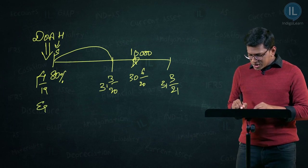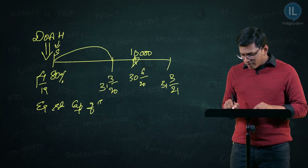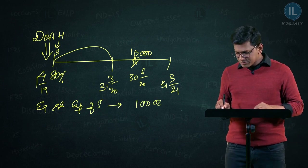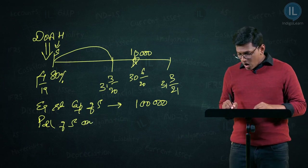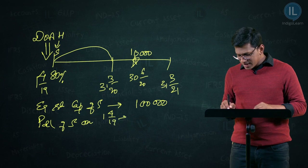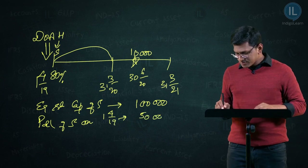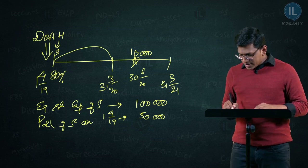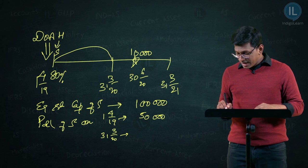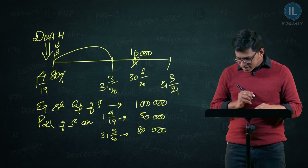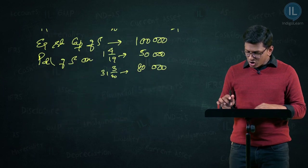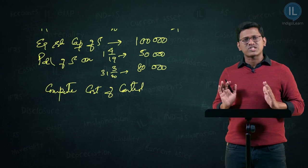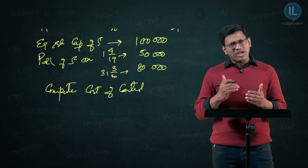The equity share capital of S is 1,00,000. The P&L of S on 1st April 2019 was 50,000, and on 31st March 2020 was 80,000. Now, what are we supposed to do? We are supposed to compute the cost of control. Let us get started and see how to deal with this one by one.